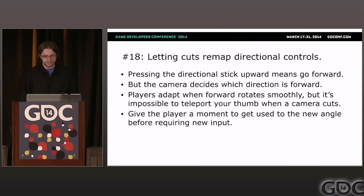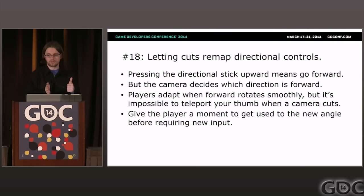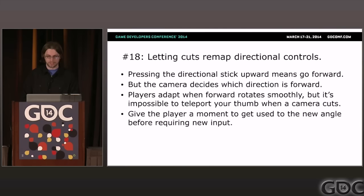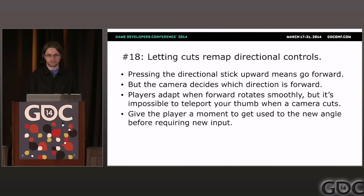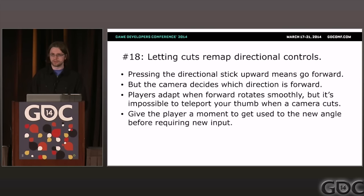Problem eighteen: letting cuts remap directional controls. Up on the analog stick means go forward, but forward is determined by whatever direction the camera is looking. When the camera suddenly rotates to a different direction, forward changes. Players physically can't teleport their thumb when the camera cuts — they need a moment to adapt. So this is a good opportunity for either a cutscene or a transition effect, or just put the player in a situation where they're not in danger when the cut happens.